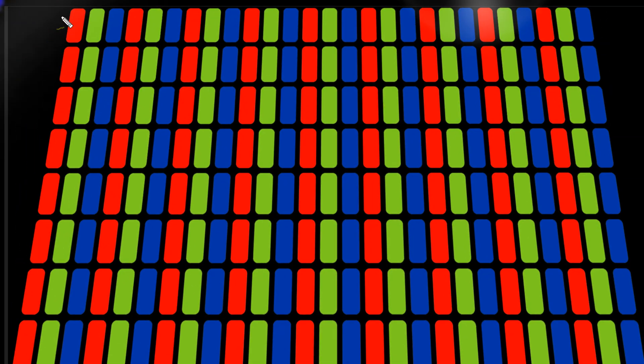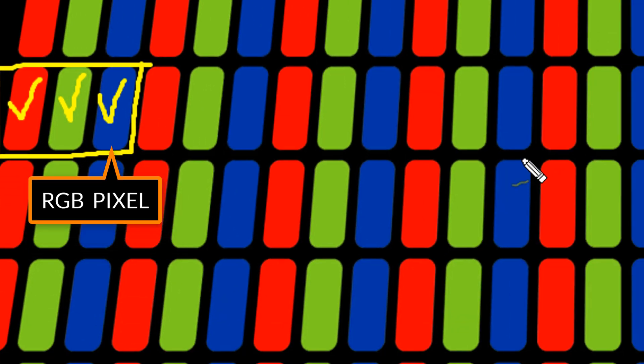If we place a magnifier on the surface of the LCD display, we see numerous tiny square particles of red, green and blue colors. And it's called RGB Pixel. That is, a pixel of the image is displayed through a red, a green and a blue filter.